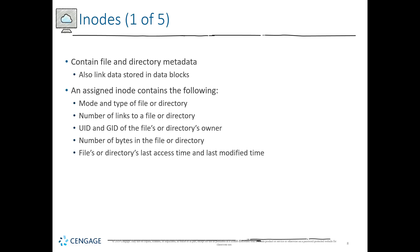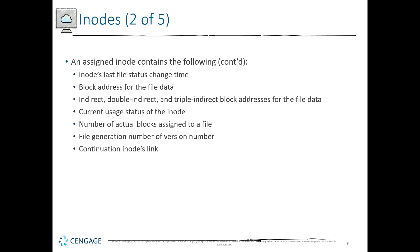Because everything is a file, directories are located and treated just as a file is. Inodes are also assigned: last file status change time, block addresses for all the file data components, indirect, double indirect, and triple indirect block addresses for the file data. We want to look at all of the chunks of data — current usage status of the inode, and the number of actual blocks assigned to a specific file. That way if you know there are 200 blocks, you can look at the direct, double indirect, and triple indirect block addresses to identify where all of the data components are, and all of that is stored in the inode.